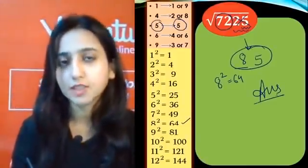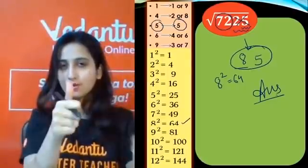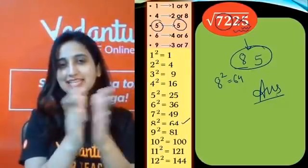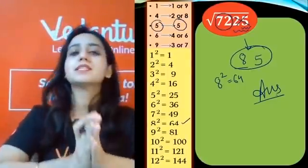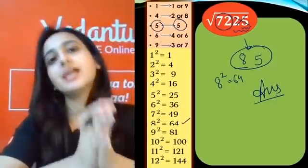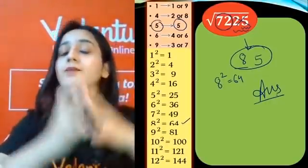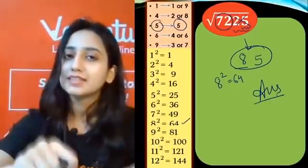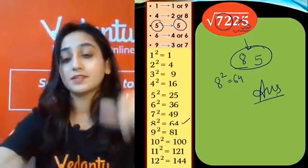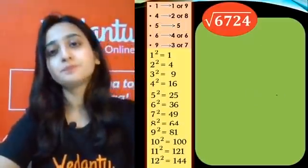For unit digit 5, there's only one possibility, so the answer is directly 85. Easy peasy! If you find this easy and helpful, please hit the like button. Do not forget to hit the like button.